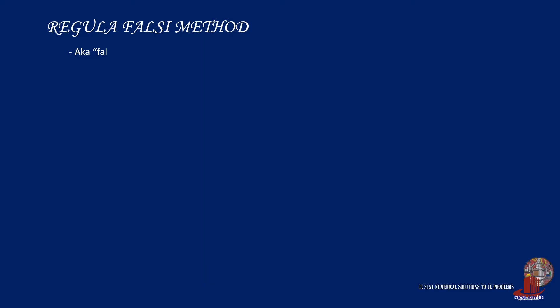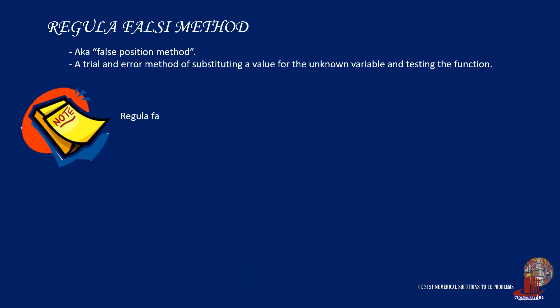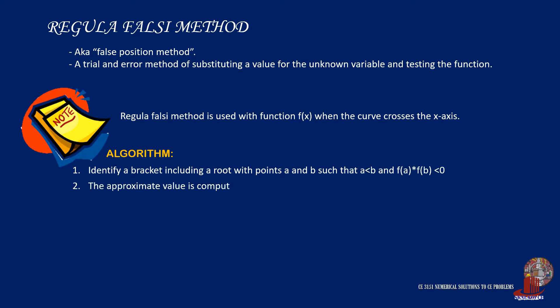Regula falsi is also known as false position, as this is a trial and error procedure by substituting a value in the function. Just like the previous assumption, this method expects that the function of x is 0. The algorithm follows most of the steps in the bisection method, with only a change in the formula for determining the approximate and the identification when to stop iterating.